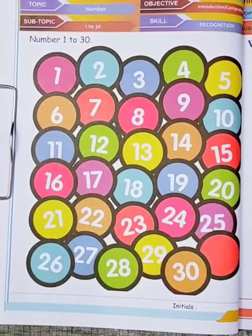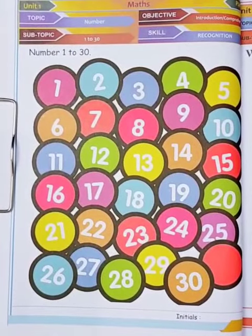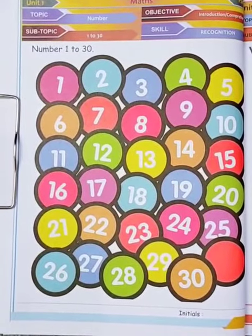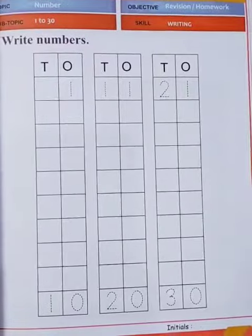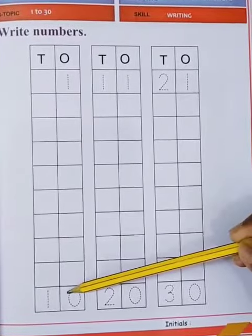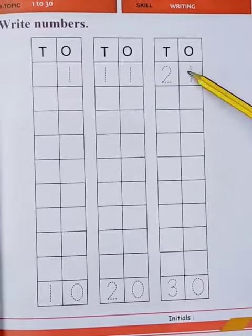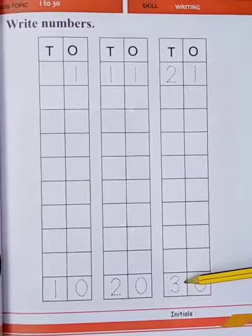...learn the numbers 1 to 30. You have to write these numbers on the next page in your book. Write numbers 1 to 10 in this column, 11 to 20 in this column, and 21 to 30 in this column.